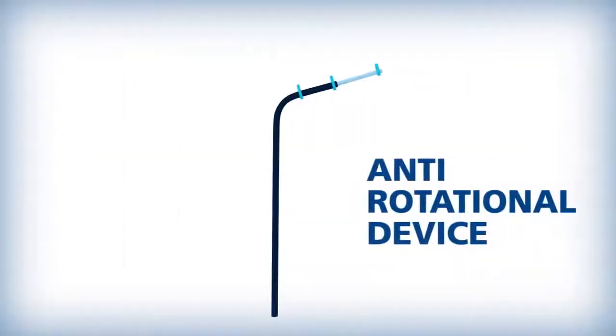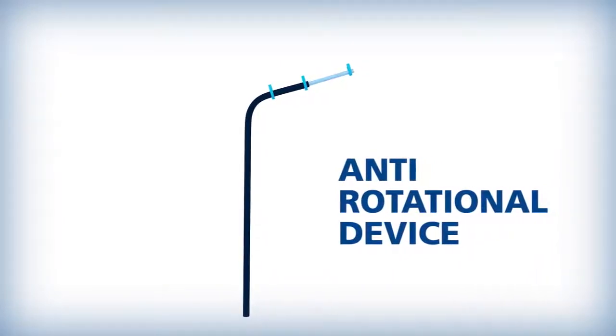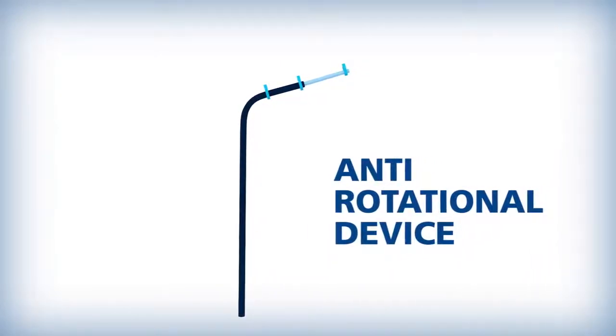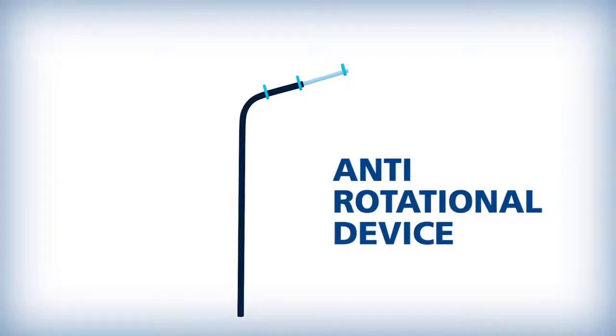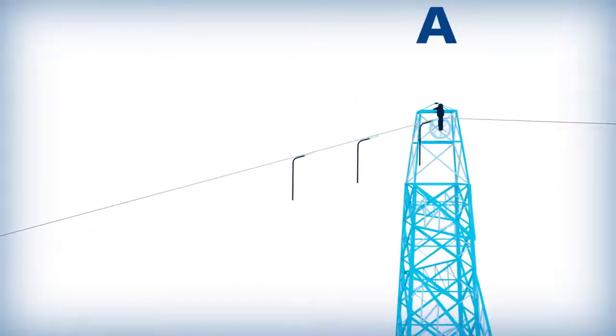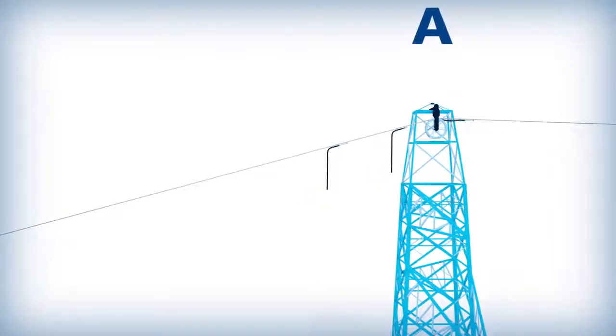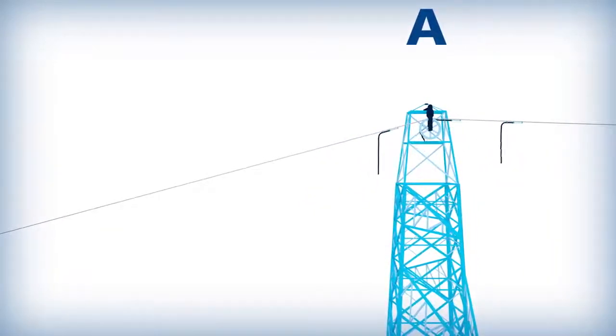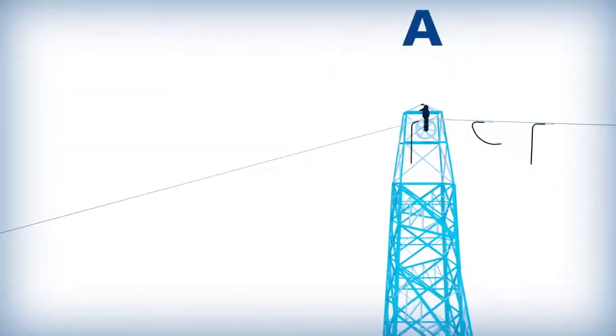AFL recommends the use of an anti-rotational device on all alumicore, centricore, and microcore designs. For OPGW installations, ARDs that attach using dummy swivels may be used, as well as ARDs that attach directly to the OPGW.